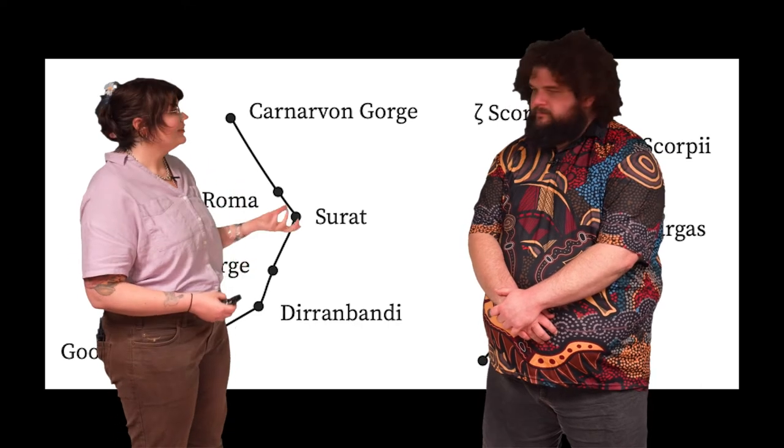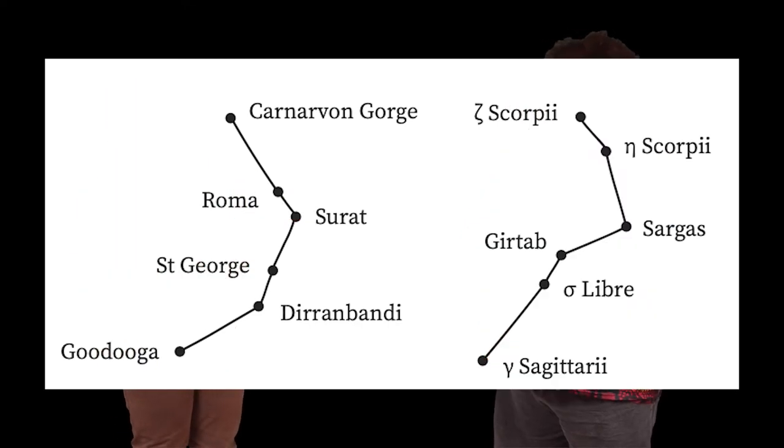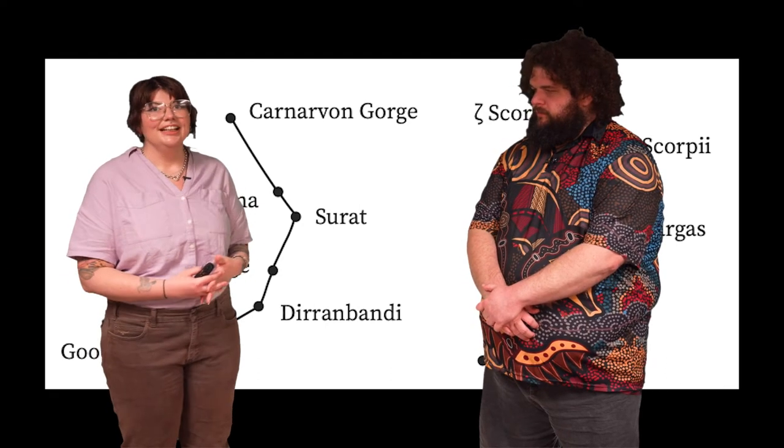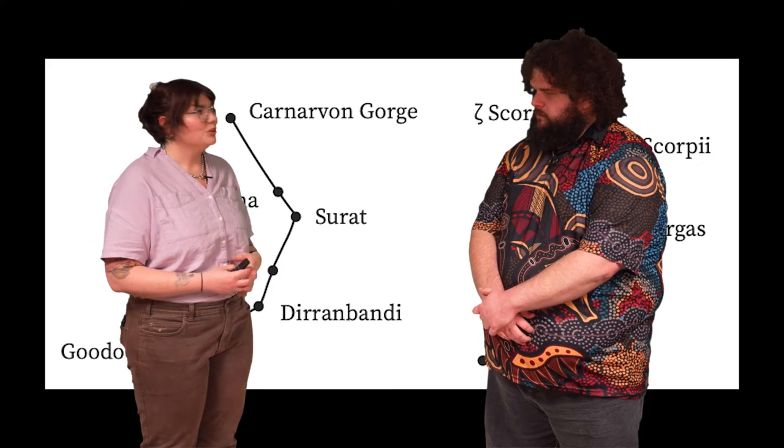And so we have examples of Durabendi, which is now a town and also St. George, which has also become a town after the creation of this highway. And everything that came after, this star map had been used for generations.